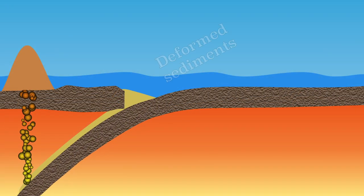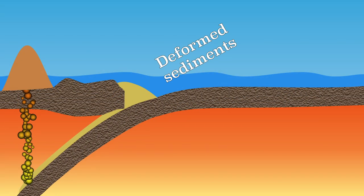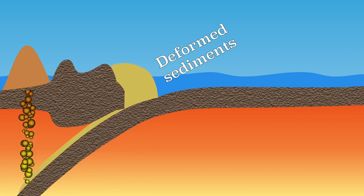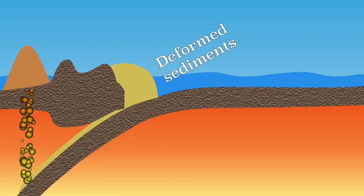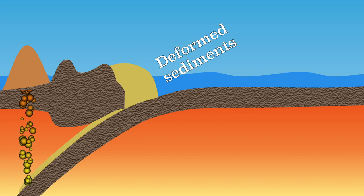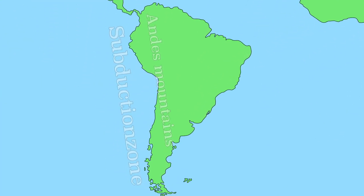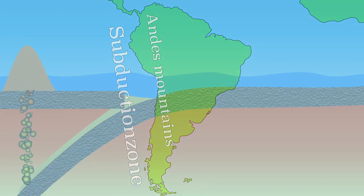Due to the convergent movement, both plates are compressed a little bit. The upper plate in particular can be compressed, creating hills. In South America, the convergent movement has even created the second highest mountain range in the world. This is just an exception, because it usually only causes a hilly landscape. The unique situation of South America will be explained in another video.